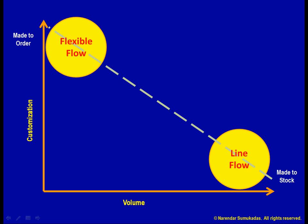Let us say I am focusing only on low cost and nothing else. Further, I am required to pick either a line flow or flexible flow process. Which end of the diagonal would I pick? That's easy — it's going to be line flow and mass production.